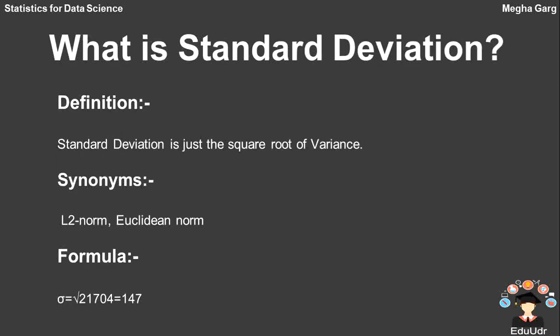Next is standard deviation, a very familiar and quite simple concept — it is the square root of variance. Using our calculated variance of 21,704, the formula gives us a standard deviation value of 147.